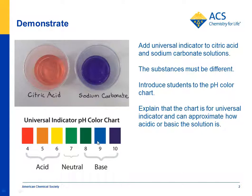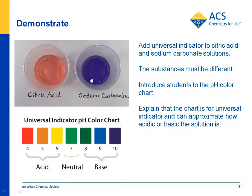If you give students a universal indicator color chart, they can begin to see that citric acid is reddish — that's at one end of the pH scale in the lower numbers — and sodium carbonate is purplish, at the other end of the pH scale. So citric acid is an acid, and sodium carbonate is a base.